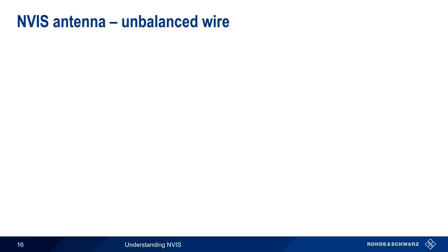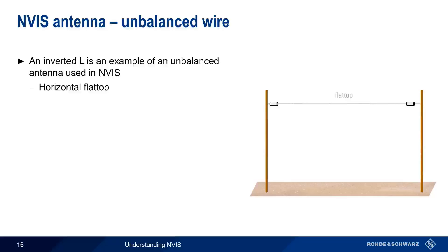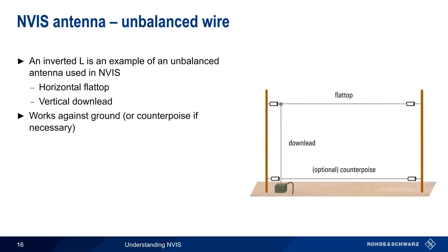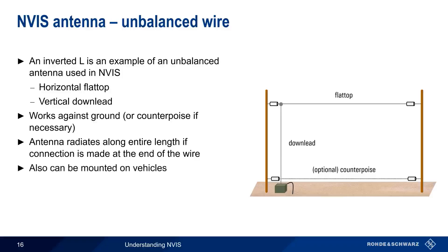Dipoles are balanced antennas, but unbalanced antennas can also be used for NVIS. An inverted L is one example of an unbalanced NVIS antenna. The name inverted L refers to the shape of the antenna. It's most commonly created by connecting a horizontal flat top to a vertical down lead. The antenna then works against ground, or against a counterpoise if necessary. Like most other unbalanced antennas, an inverted L radiates along its entire length if the radio is connected to the end of the wire. As we'll see shortly, inverted Ls are also a popular choice for vehicle-mounted NVIS antennas.